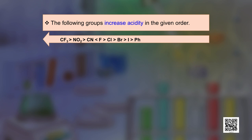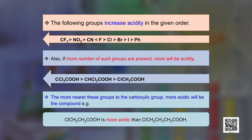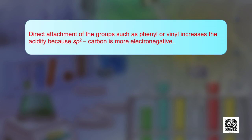More electron-withdrawing groups in a molecule result in greater acidity. Trichloroacetic acid is more acidic than dichloroacetic acid, which is more acidic than monochloroacetic acid. The nearer the electron-withdrawing group to the carboxylic group, the greater the acidity. The direct attachment of phenyl or vinyl groups increases acidity because sp2 carbon is more electronegative, despite the expected decrease due to resonance effect.